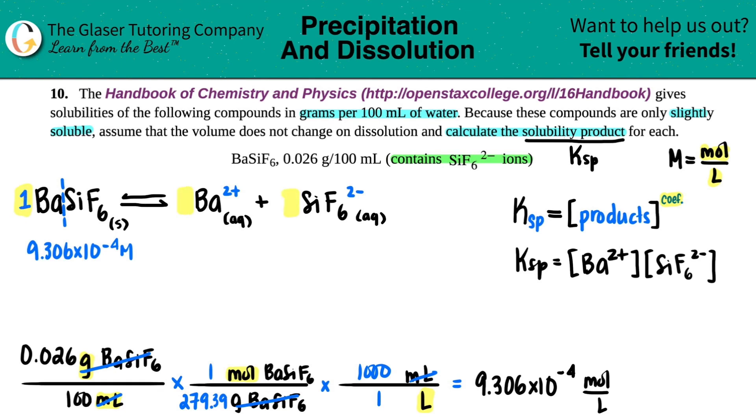From this information, we could find out what the barium concentration is and the SiF6 by doing our mole ratios, just looking at those coefficients. For this equation, they're all the same. It's a one to one to one ratio. So that means that whatever this molarity is, these would be the same. So the barium 2+ would also be 9.306 times 10 to the negative fourth molarity. And the SiF6 2- would be the same.